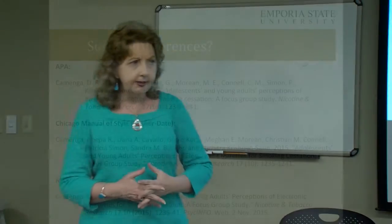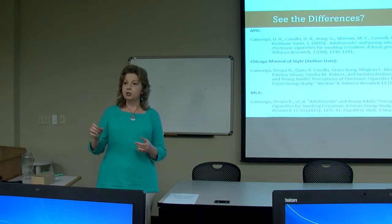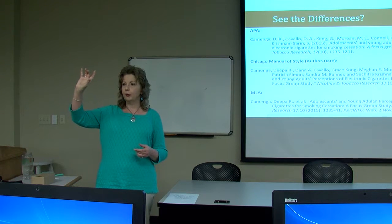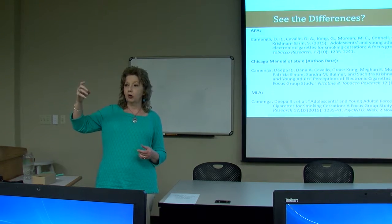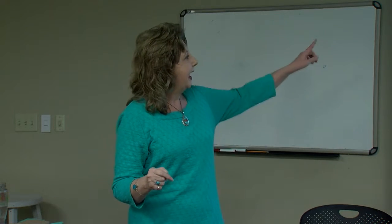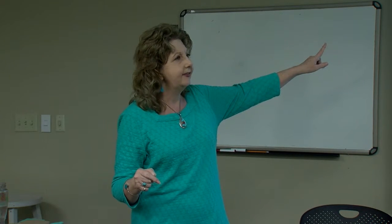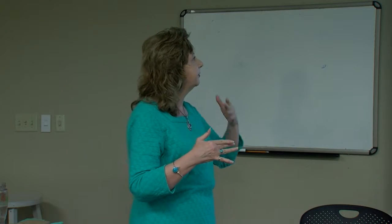If you've done any searching in library databases such as PsycInfo, you'll see that databases generally have something called a cite feature or citation tool. That lets you click on a record — maybe a reference to a journal article — and it will convert that record into a specific citation style, such as APA or MLA. When we see the differences between citation styles, we can see what APA is all about when it focuses upon the year.